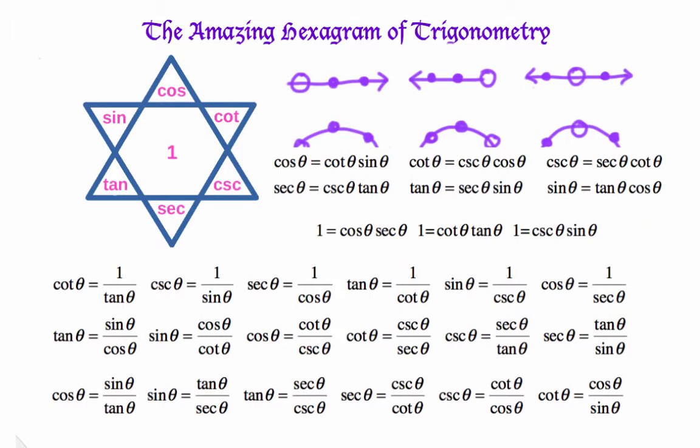So the amazing hexagram of trig can produce all of these 27 formulae very easily. What I recommend you do is try and draw this diagram. Put in the six functions in alphabetical order. Remember to swap the last two with the one in the middle. And then just write out the formulas.